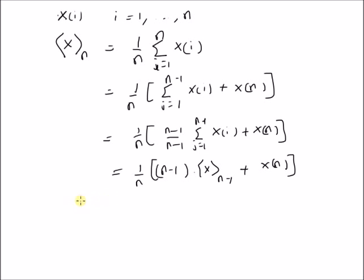Therefore, this can be rewritten as the sample mean at the nth value is equal to the sample mean at n minus 1 minus sample mean at n minus 1 divided by n plus x(n), the latest value divided by n.